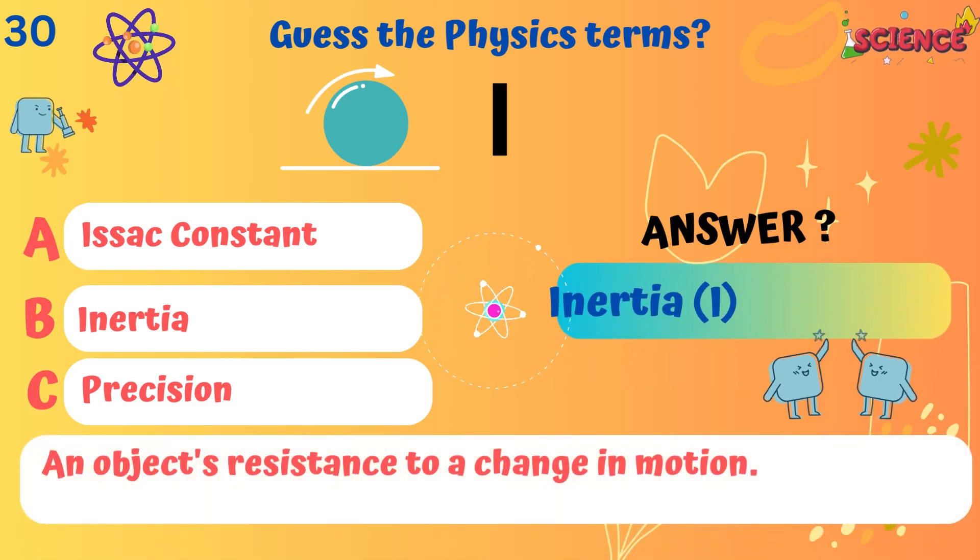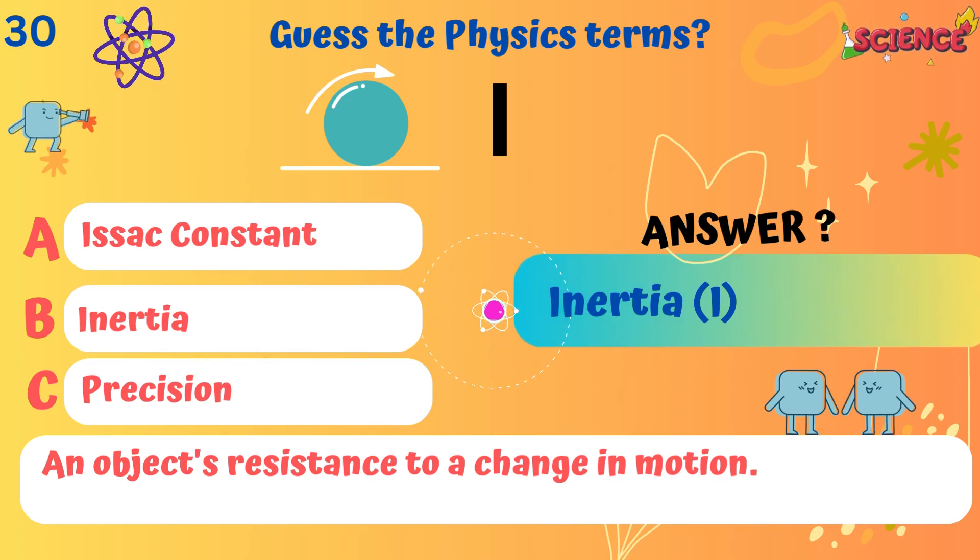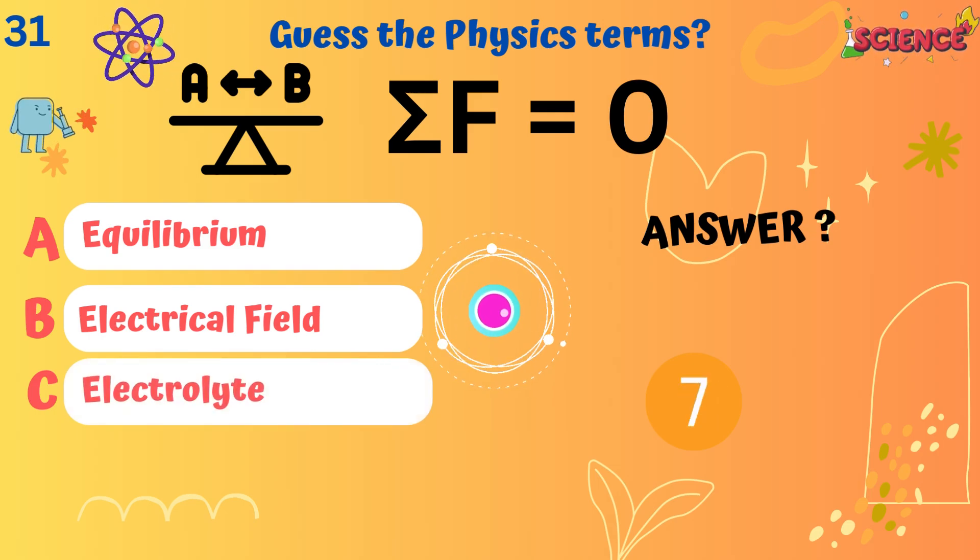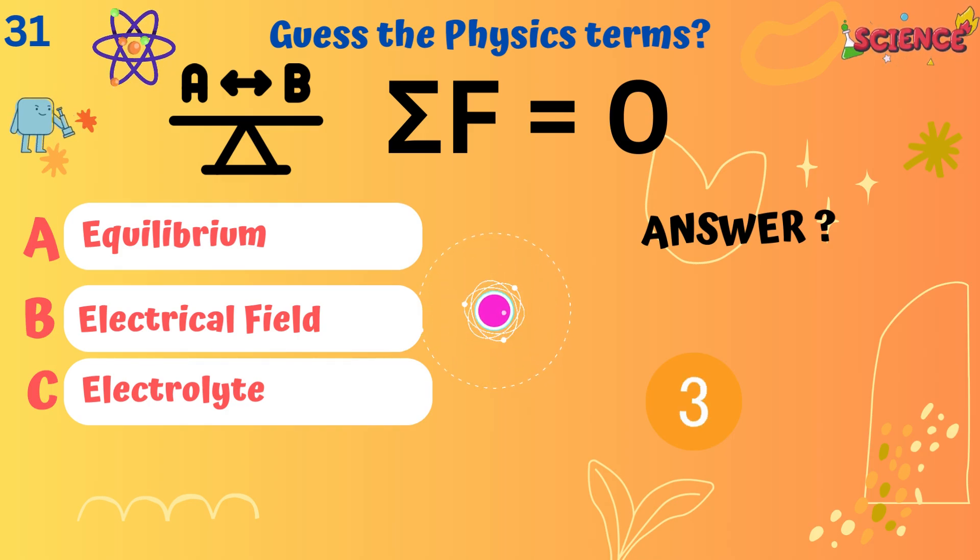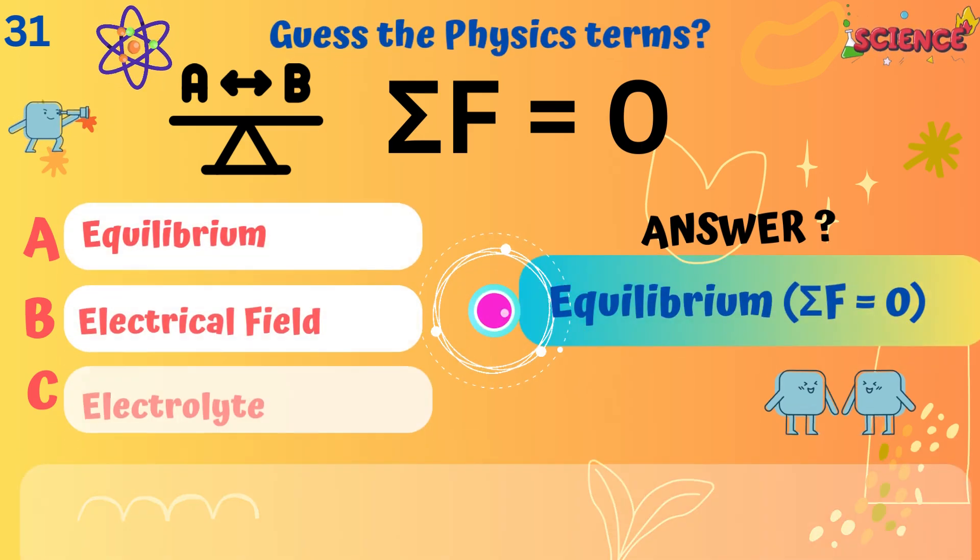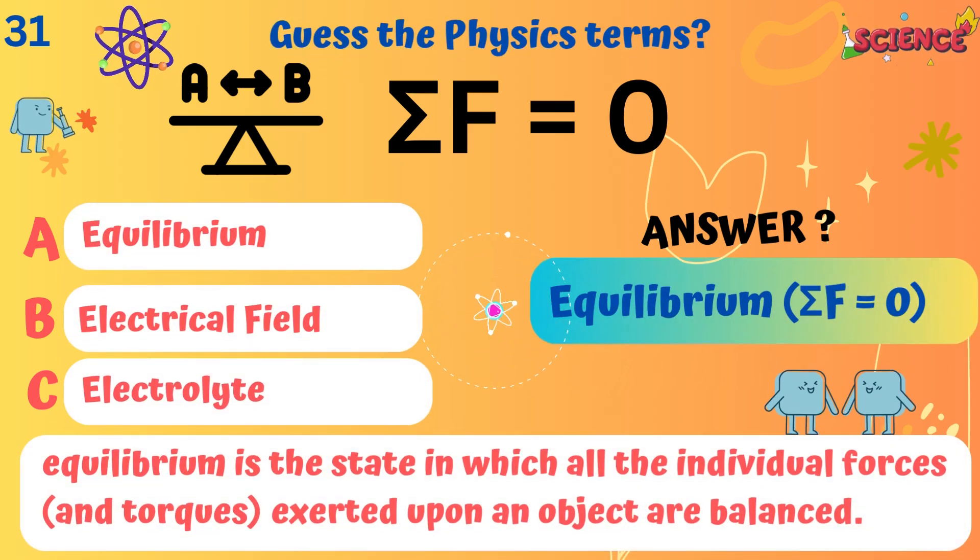Inertia. An object's resistance to a change in motion. Equilibrium. Equilibrium is the state in which all the individual forces exerted upon an object are balanced.